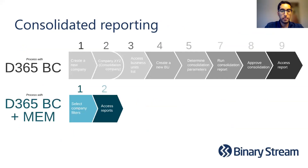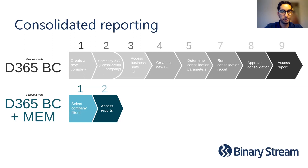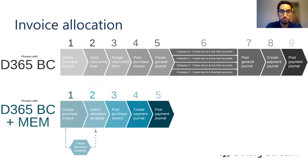Let's finish with a couple more slides about how much simpler it gets with MEM. Anyone in accounting knows that consolidated reporting can be a hassle. You'll see at the top the process with just Business Central without MEM — it's pretty challenging and takes a long time. With MEM, it's really two steps — that simple. And on the next slide, you'll see invoice allocation as well — same thing: super streamlined, super easy, much more automated, with huge time and cost savings as a result.